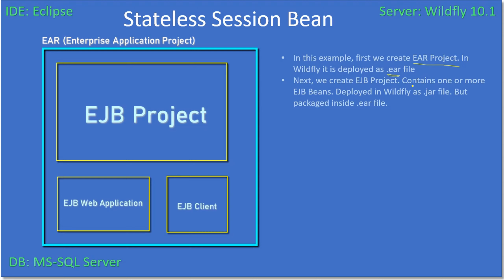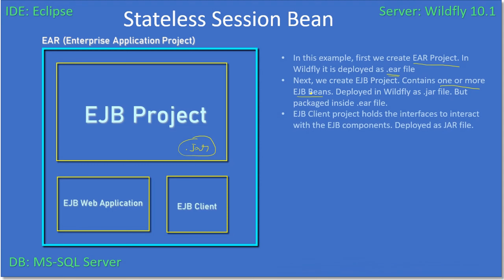Next we create the EJB project. An EJB project can contain one or more EJB beans. When we deploy the EJB project to the server, it goes as a JAR file. This JAR file is packaged inside the enterprise application project, so the EAR project contains the JAR file, and the JAR file will have one or more EJB beans.